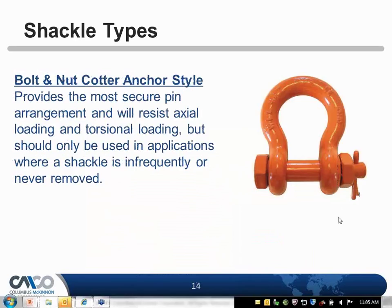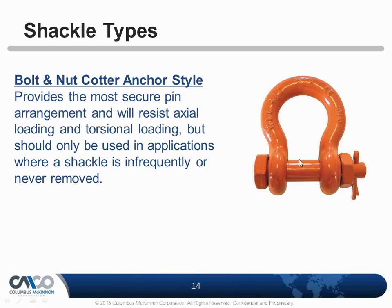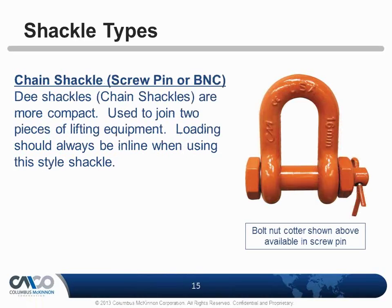If you're going to leave this on a piece of equipment or where you don't want to keep taking the shackle on and off, we recommend the bolt nut cotter type. Both are the same shackle body — just the pin design is a little bit different. When you want a smaller, more compact shackle, we use what we call the D shackle or chain shackle. They're more for direct in-line loading or where you need a smaller body shape.